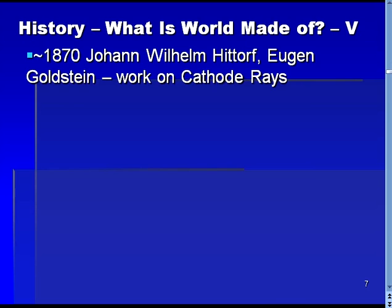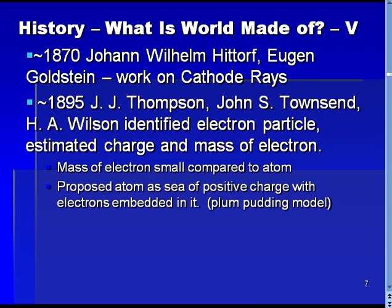At about the same time that Mendeleev organized the complexity of elements into a powerfully descriptive periodic table, work by Hittorf and Goldstein began to investigate the existence of rays emitted by cathodes. Just prior to the beginning of the 20th century, J.J. Thompson and his colleagues Townsend and Wilson identified the cathode rays as being composed of individual particles and estimated their charge and mass. The mass of these particles, which were called electrons, were observed to be over a thousand times less than that of the atom, and this led Thompson to propose the Plum-Pudding model of the atom, in which matter was built from atoms that were essentially balls of positive charge with small, negatively charged electrons embedded inside.